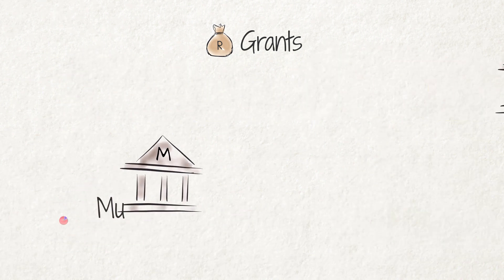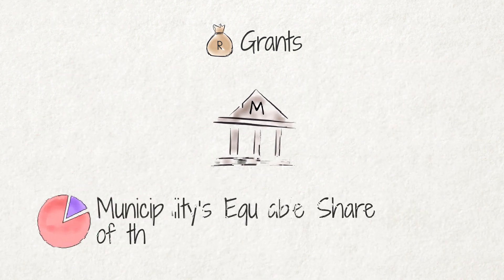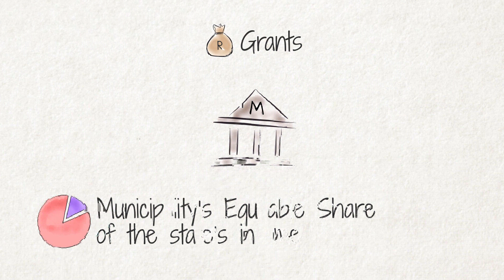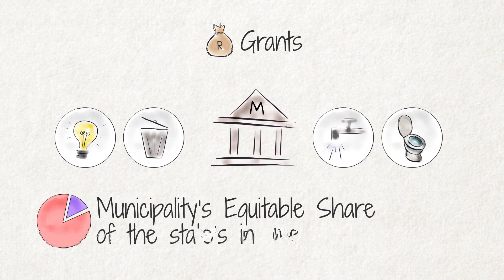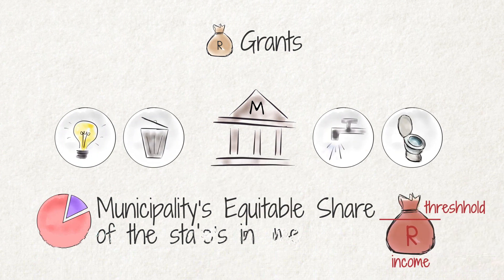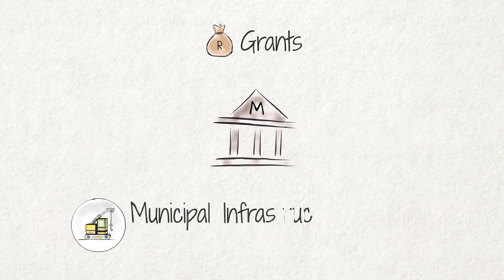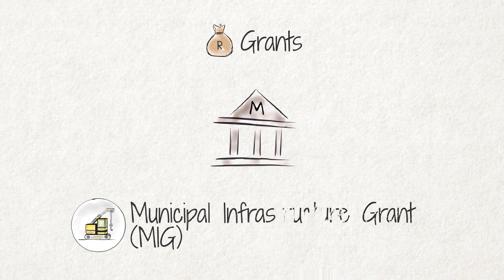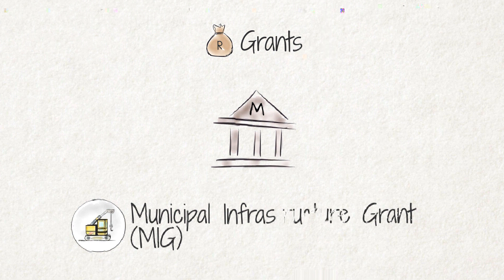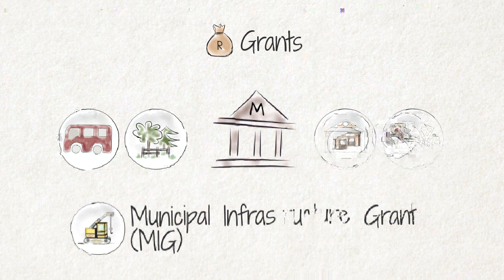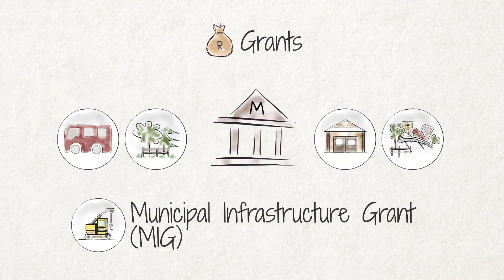The municipality's equitable share of the state's income is used to help pay for the cost of basic services for people whose income is below a certain threshold. The Municipal Infrastructure Grant, called MIG, is designed to help pay for the construction costs of basic infrastructure services that mainly benefit the poor.